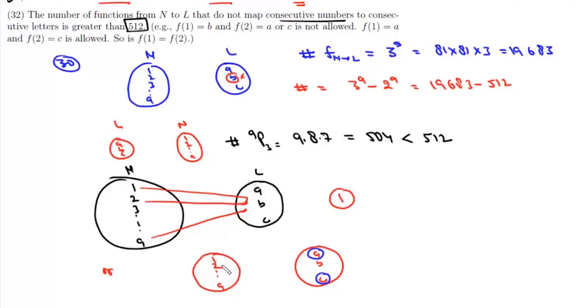So total number of such functions will be 2^9 which is 512. So number of such functions is 513 which is greater than 512. That means this statement 32 is also correct.